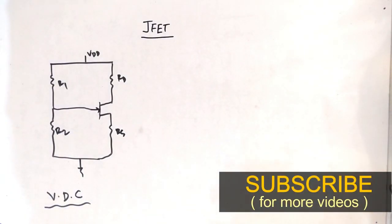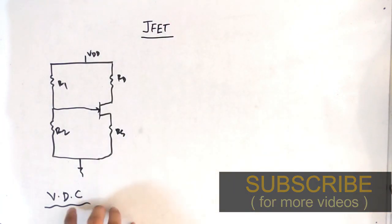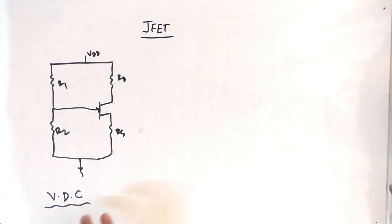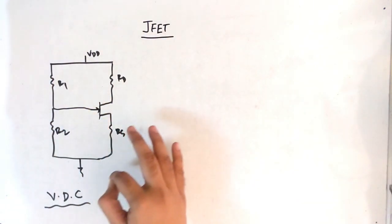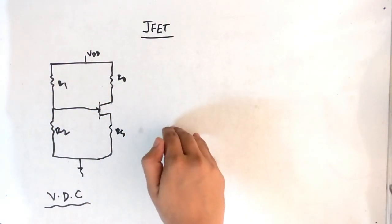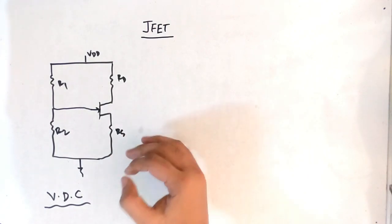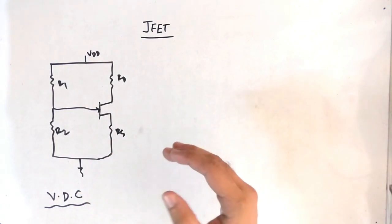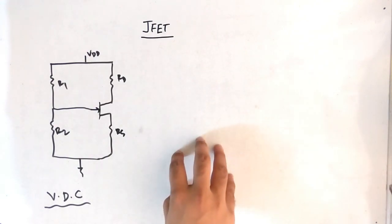Hello friends, my name is Shrenik Jain and in this video we will study about the JFET configuration. The last configuration we have is the VDC, that is the Voltage Divider Configuration. This is the circuit of the voltage divider configuration and in this video we have to do the DC analysis to find the various parameters, and also we will do the design steps. So two things we will cover in this video.